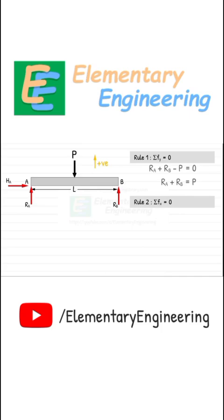Now apply the second rule - the sum of all horizontal forces must be zero. Since we only have the hinge reaction HA and no other side to side forces, it gives us HA equal to zero.